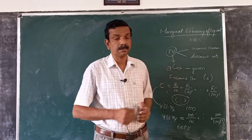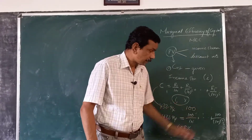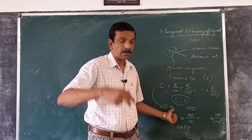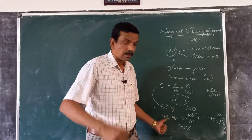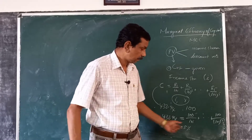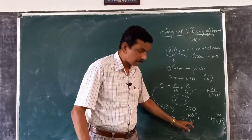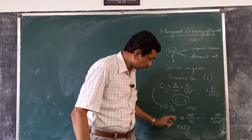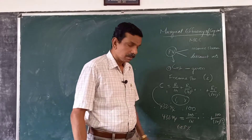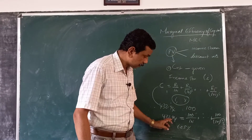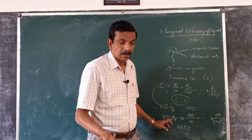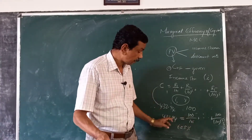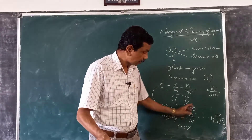For a given income stream, higher the price of the capital good, lower is the value of i; lower the price of the capital good, higher the value of i. If the cost is 432.94, i is 5 percent. If the cost is 421, i is 6 percent. If the cost is 445, i is 4 percent.